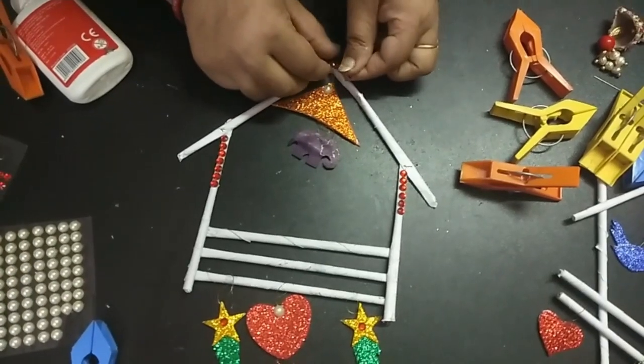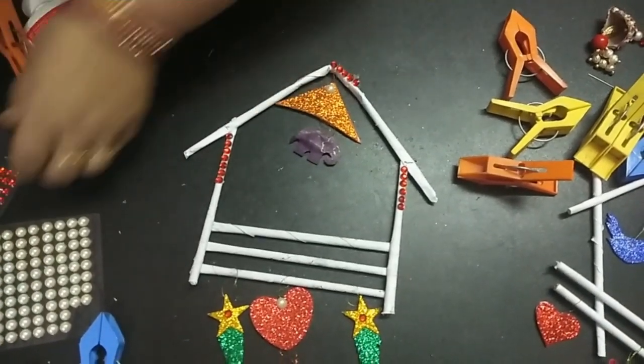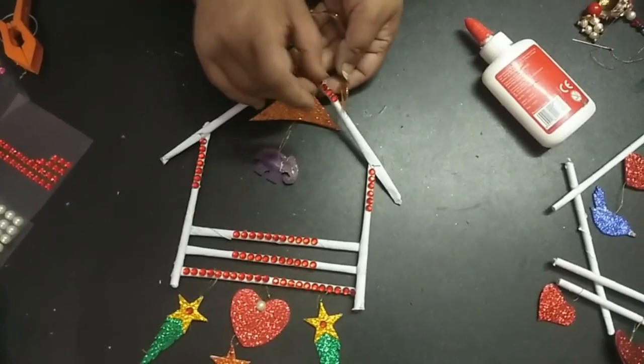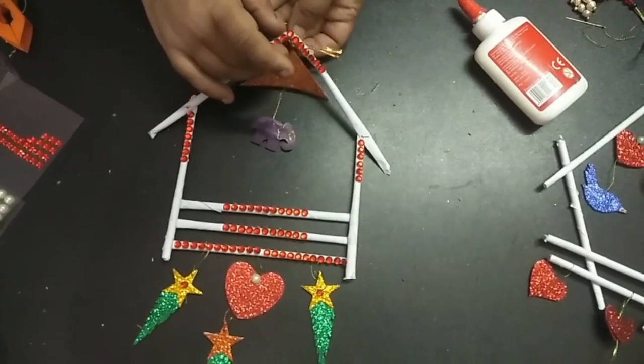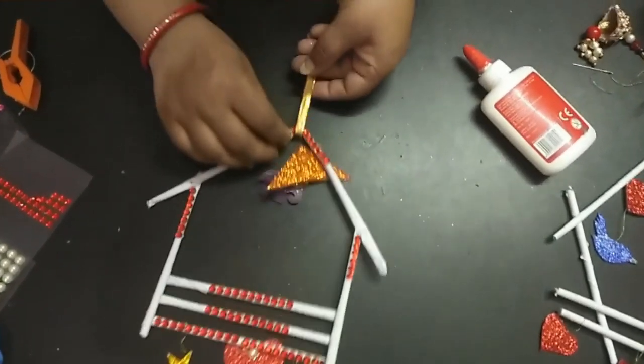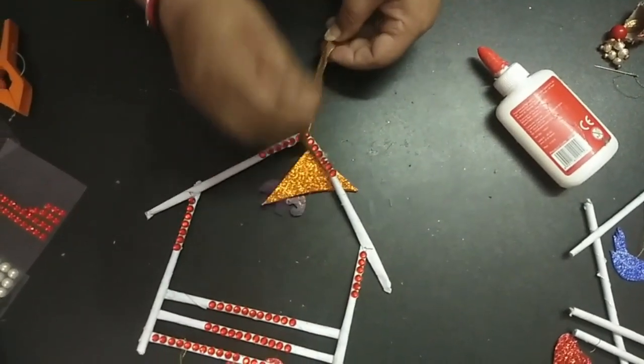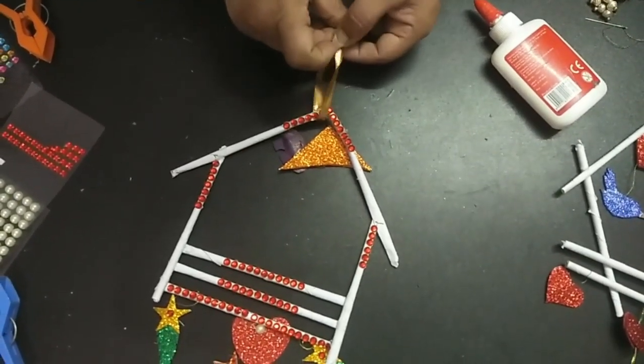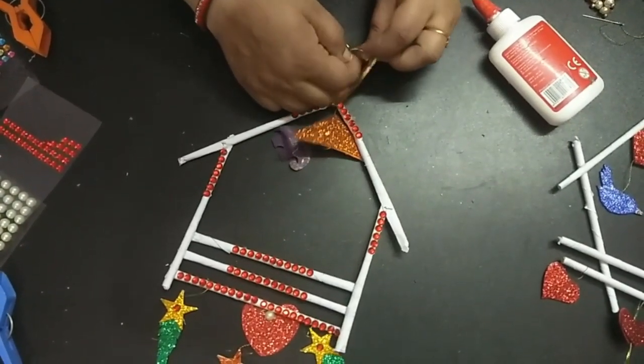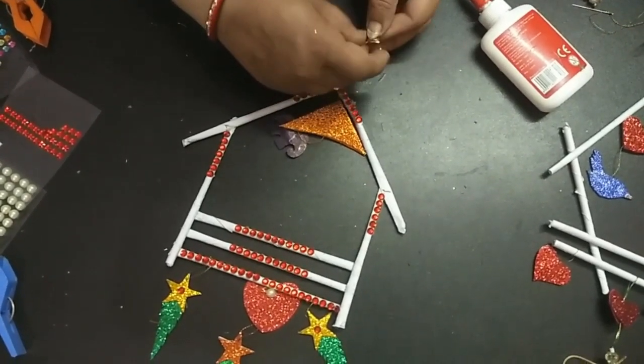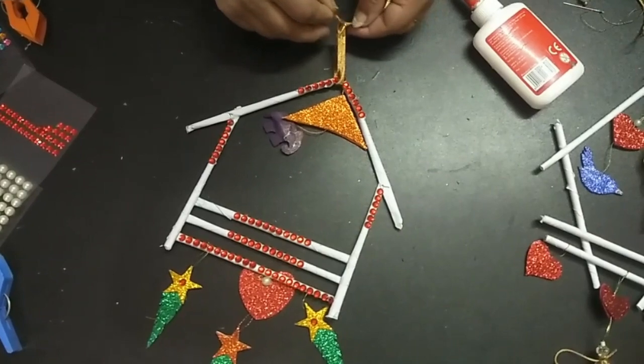Now after decorating it all, we'll just put a ribbon. So you can take any color ribbon and you can just tie it together with a double knot, one and then this way.